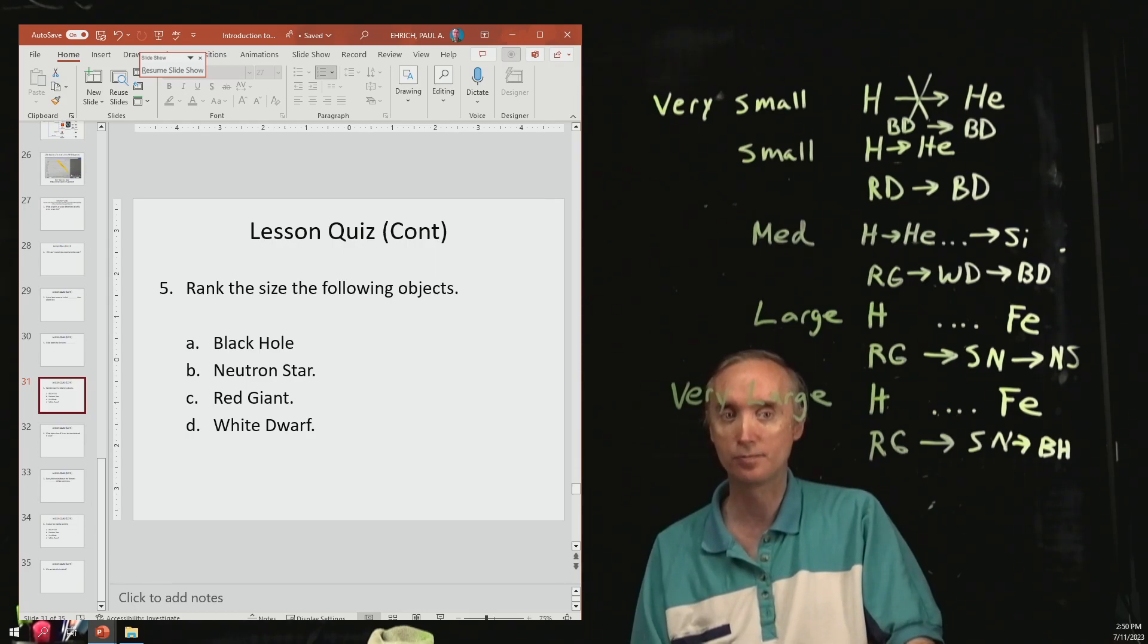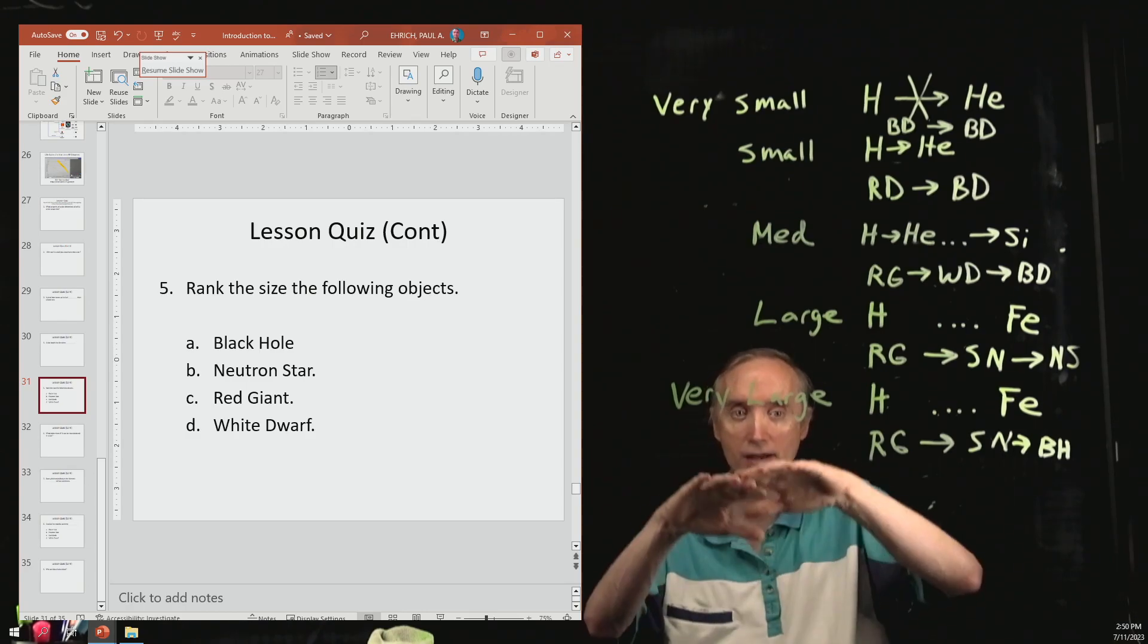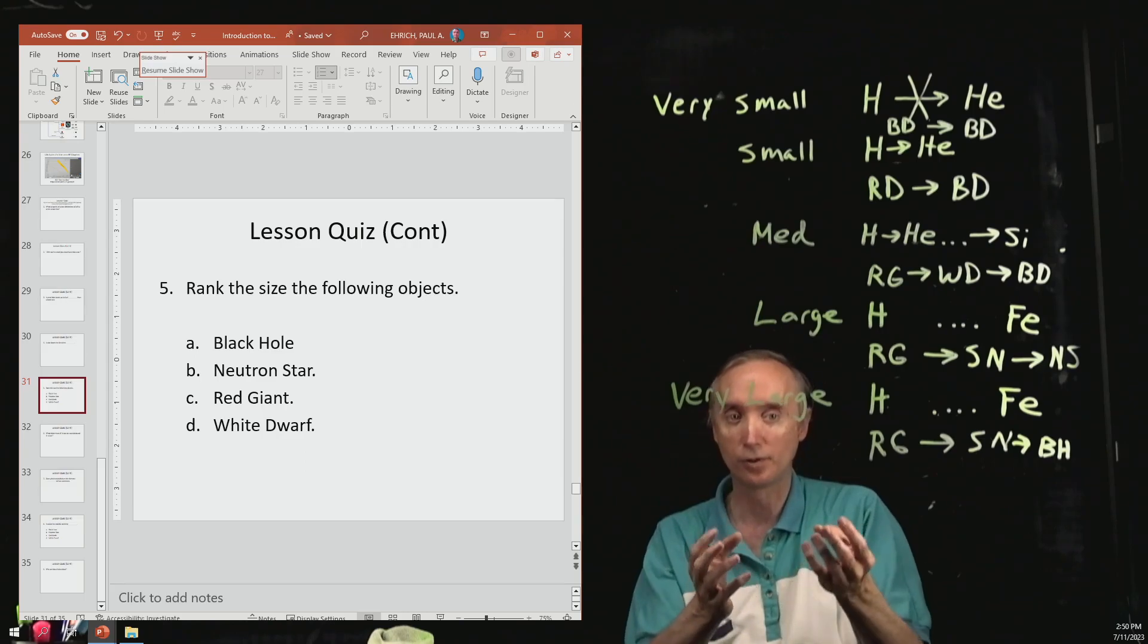Then the smallest one, the next smallest one, is going to be the neutron star. And then really, the black hole doesn't have any size to it because it has shrunk to a mathematical point. Now, it does have that event horizon, but remember the event horizon is not physically part of the black hole.